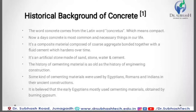Concrete is a composite material composed of water, cement, fine aggregate, coarse aggregate and admixtures. It is an artificial material — an artificial stone — made of sand, stone, water and cement. The history of cementing materials is as old as the history of engineering construction.